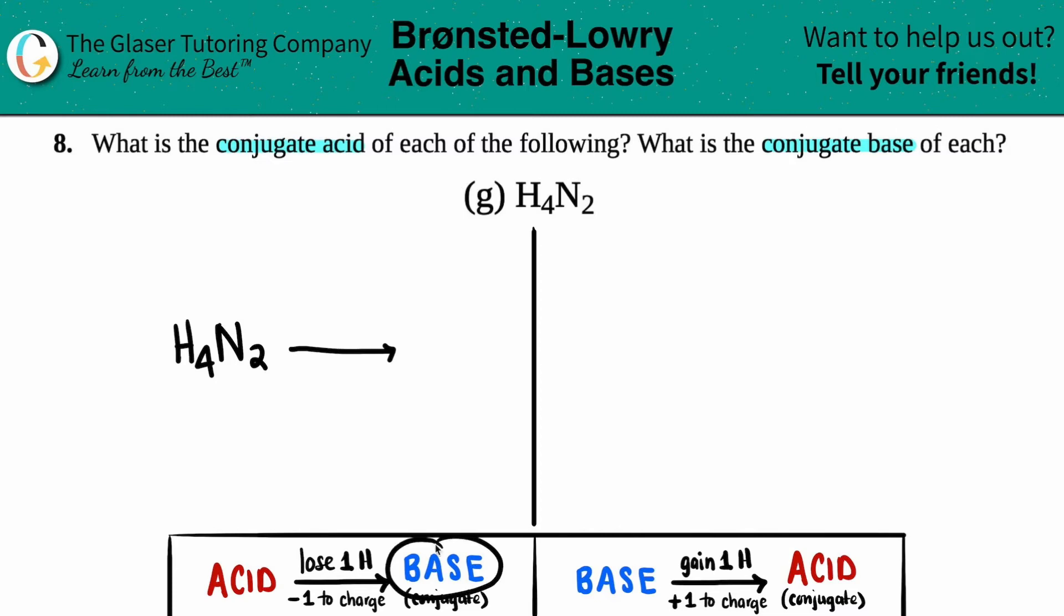And the word conjugate just kind of means other; it's basically the pair of the acid. Now remember, a base is always one less hydrogen than its acid. So all you got to do is just find where the hydrogen is and knock it down one. In this case here's the hydrogen, you got four of them. So if you're trying to find the conjugate base, all I'm going to do is drop down from a four to a three. The two nitrogens come along for the ride and now you have to correct the charge.